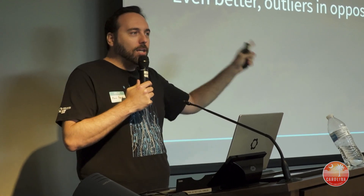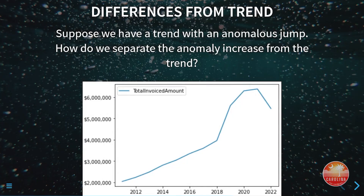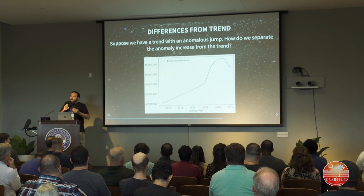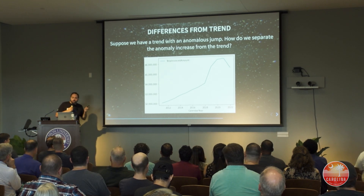Also, an outlier in each direction — opposite directions — cancel each other out. So I can have several outliers on both sides and it won't seriously affect my ability to check whether the next data point is an outlier as well. Now suppose we've got a trend and there's an anomalous jump. The question is: how much of this jump is anomalous and how much is trend? Because we expected some amount up — and is this last data point actually anomalous or not? Really hard to tell by eyeballing it.